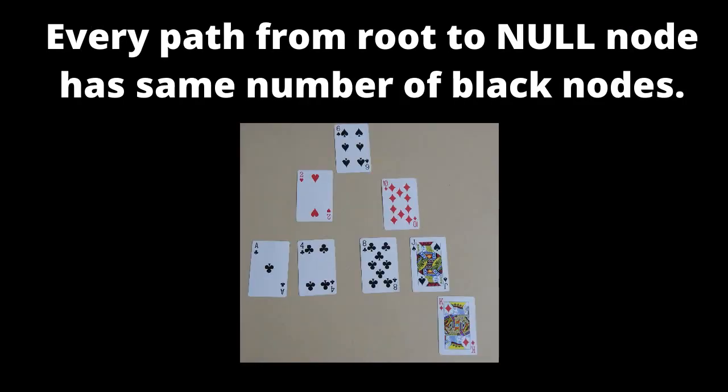5. For each node, all simple paths from the node to the descendant leaves contain the same number of black nodes.